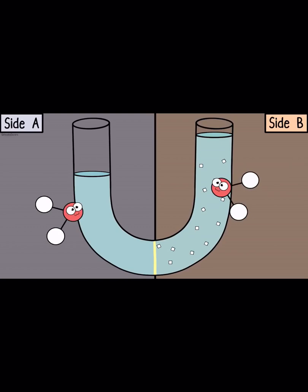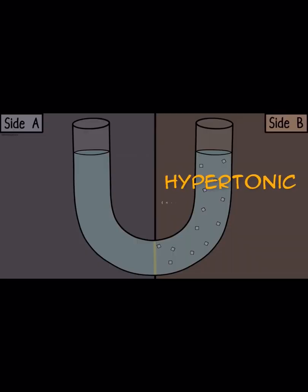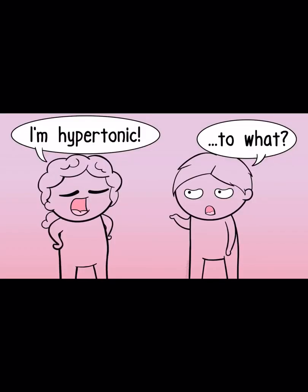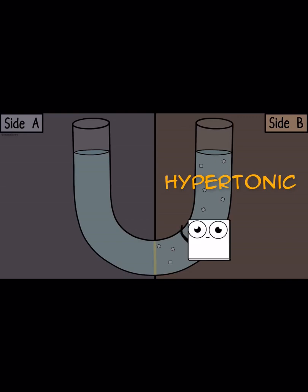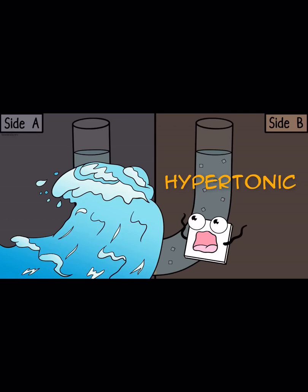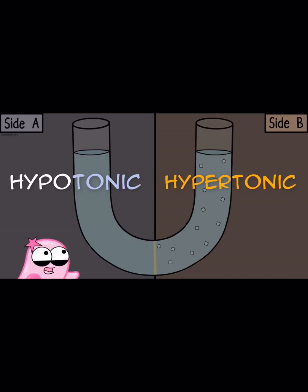Once equilibrium is reached, net movement of water across the two sides is zero, though water molecules continue to move. Here's some vocabulary: side B is called hypertonic — meaning higher solute concentration — but we can only say something is hypertonic relative to something else. Side B is hypertonic to side A because it has a higher solute concentration. In osmosis, water moves to the hypertonic side. Side A is hypotonic — 'hypo' rhymes with 'low,' which helps remember it has the lower solute concentration.